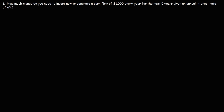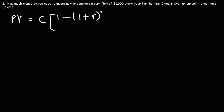Let's find the answer. This is a formula we could use: the present value of an annuity is equal to the cash flow times 1 minus (1 plus R) raised to the negative N, divided by R, where R is the interest rate.